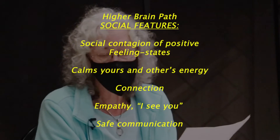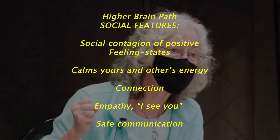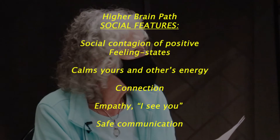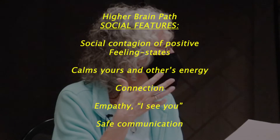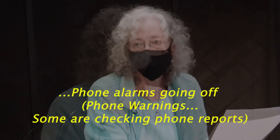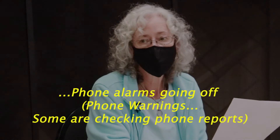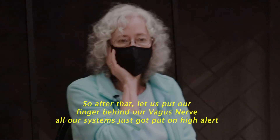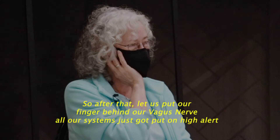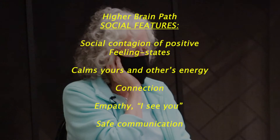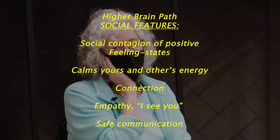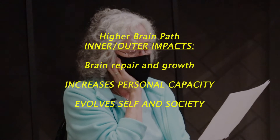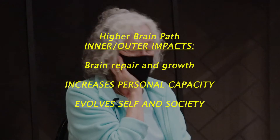The social features of the higher brain path are positive social contagion — because these are the feeling states we need. Social contagion of positive feeling states calms not only your own energy but others' as well. There's connection, empathy, and safe communication. The inner and outer impacts: brain repair and growth happen, it increases your personal capacity, and it evolves yourself and society.